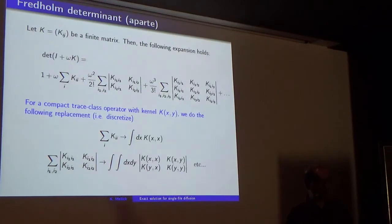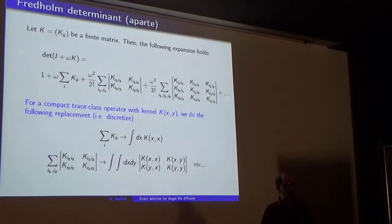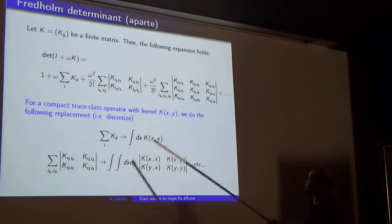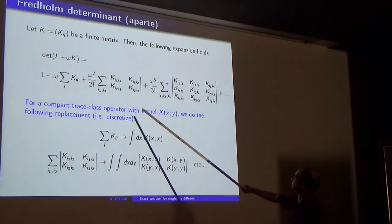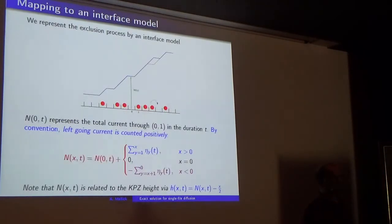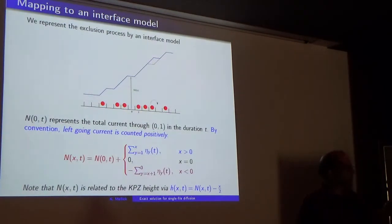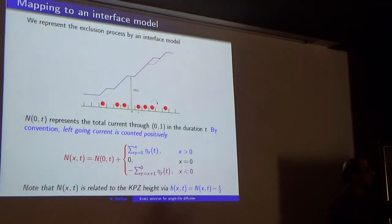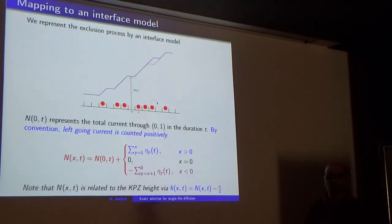This variable omega, which plays an important role in many calculations in the exclusion process, embodies some fundamental symmetries of the model by particle-hole exchange and time reversal. The Fredholm determinant — just to recall for everybody — uses the classical formula that the first-order perturbation of a determinant is a trace, the second order involves two-by-two minors, three-by-three, and so on. In the continuous limit all these sums become integrals, and you define the Fredholm determinant by this iterative series.